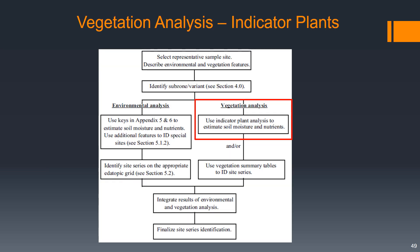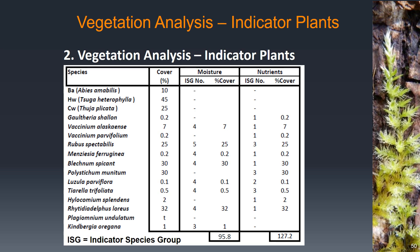There are two approaches to the vegetation analysis, and the first that we'll do is using indicator plant analysis to estimate the soil moisture and soil nutrient regimes. In the field we did a vegetation survey where we identified all of the plant species in an area of our plot, and we also estimated the percent cover of each of those species, so that's what's in this table here.